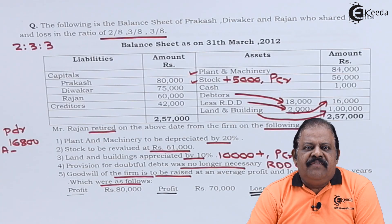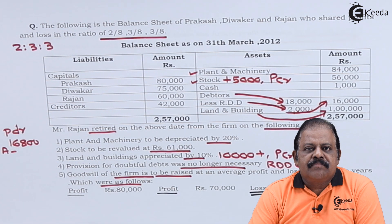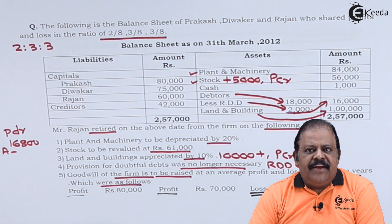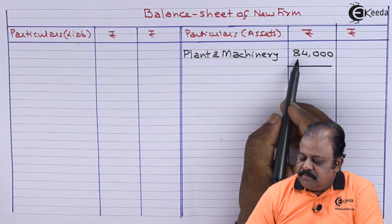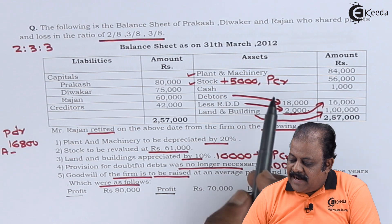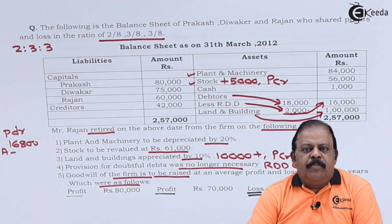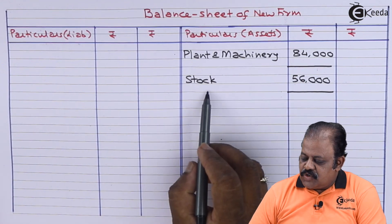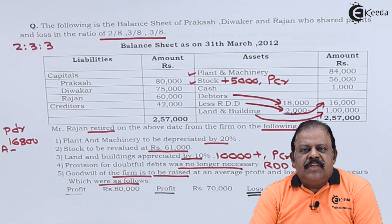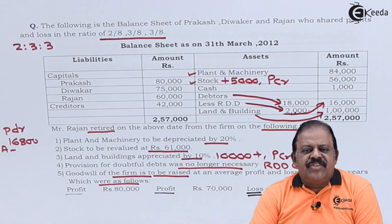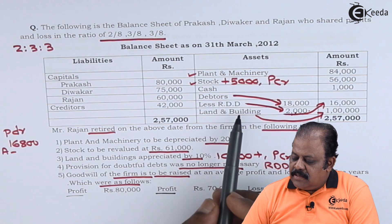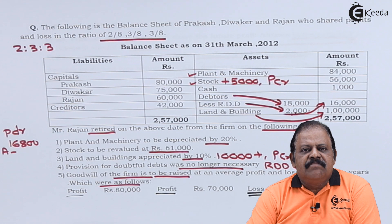Let us start posting in various accounts. Plant and machinery 84,000 — there is an adjustment on this item, so it will be recorded in the new balance sheet asset side inner column as 84,000. Stock 56,000 — there is an adjustment on stock, so it will be recorded in the inner column as 56,000. Cash 1,000 — there is no adjustment on cash, so it will be recorded on the asset side as 1,000. Debtors — there is an adjustment on RDD, so it will be recorded in the inner column.